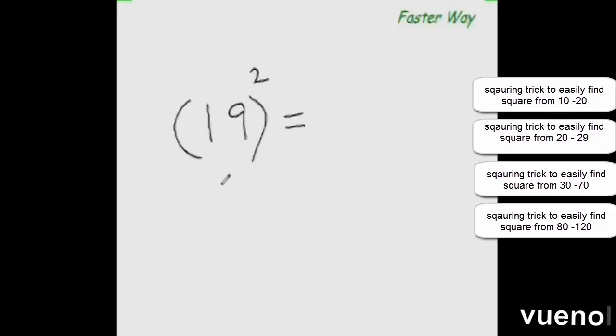So what is 19 square? Add this units digit to the entire number. So 9 plus 19 is 28. One more place to go. So find the square of 9. 9 square is 81. 28 plus 8 is 36. So the answer is 361.